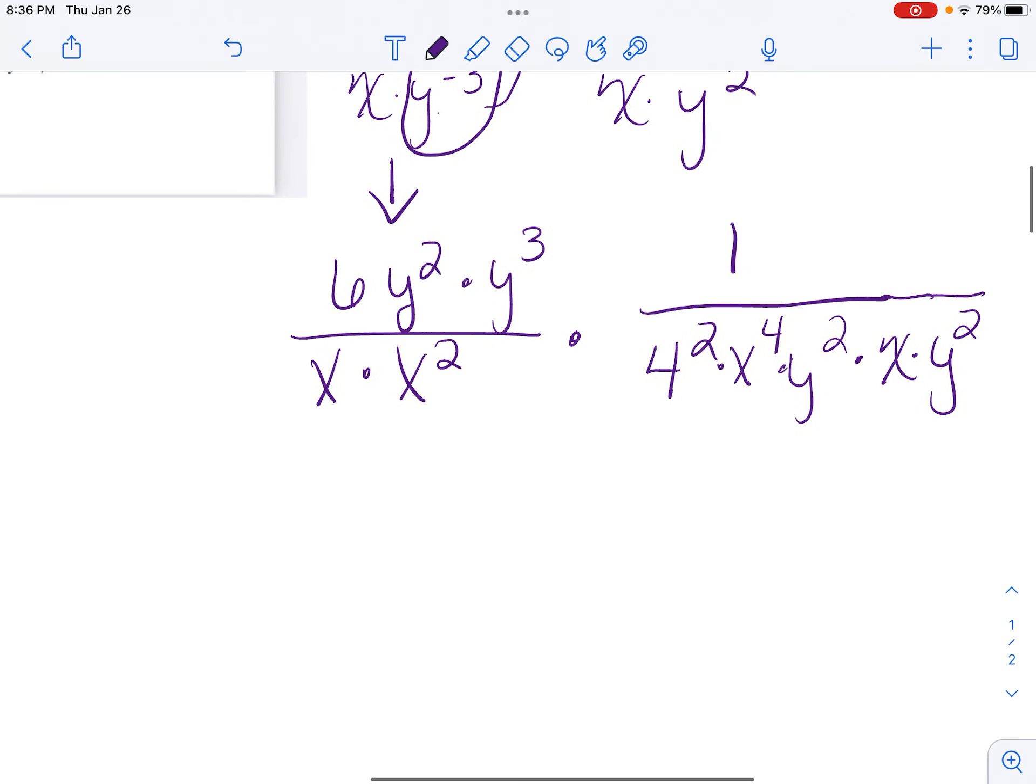So now I'm just going to combine. So I bring down my 6. y squared times y to the 3rd, we add the exponents as y to the 5th. x to the 1 times x squared is x to the 3rd.